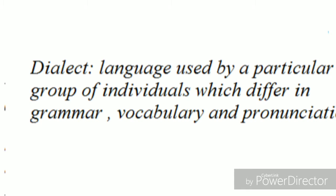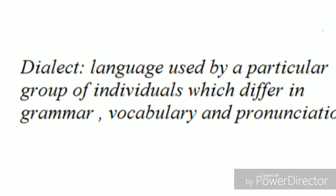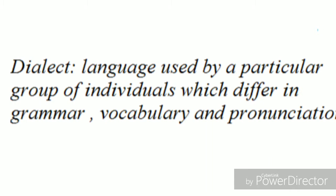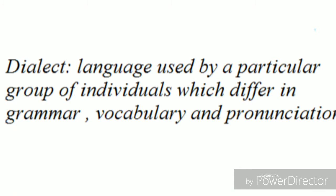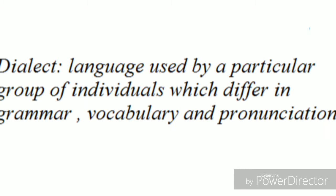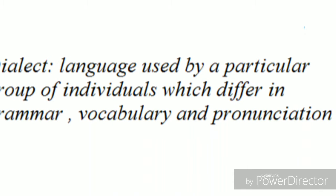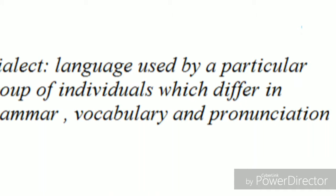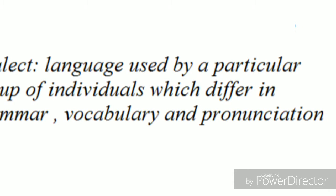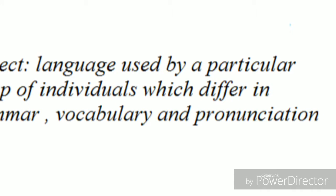The next important topic is dialect. Dialect is a language variety used by a particular group of individuals which differs in grammar, vocabulary, and pronunciation. For example, there are national varieties of English such as American English, Canadian English, Australian English, etc. The word 'colour' spelled C-O-L-O-U-R is the standard spelling, but in American English it is spelled C-O-L-O-R. That is what a dialect is.